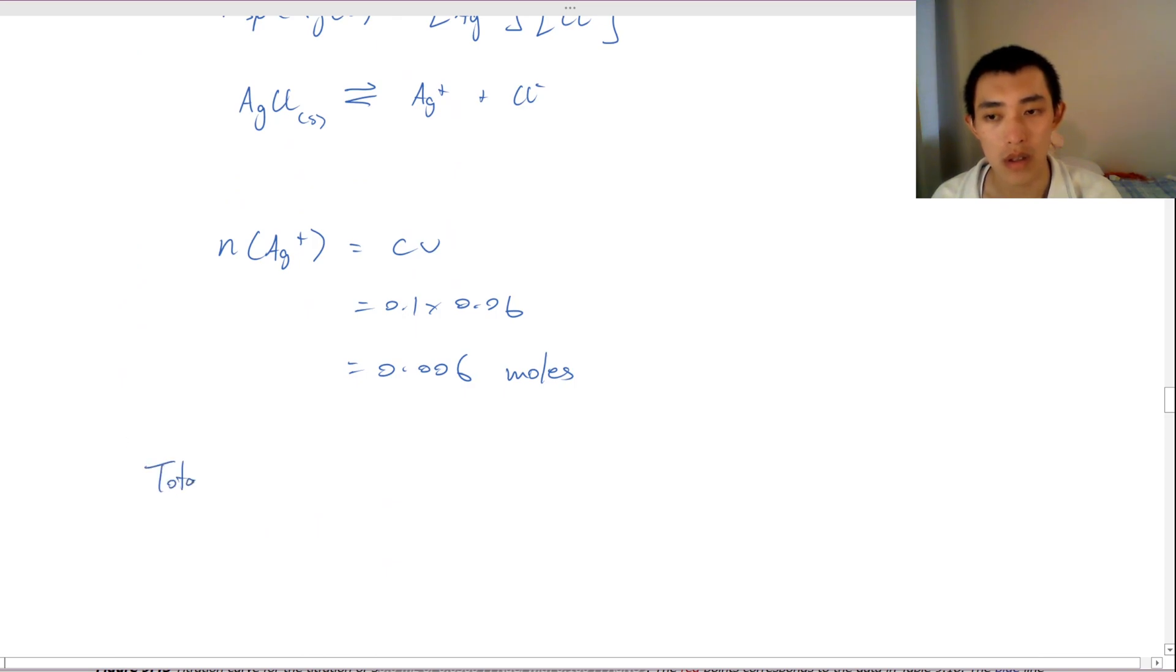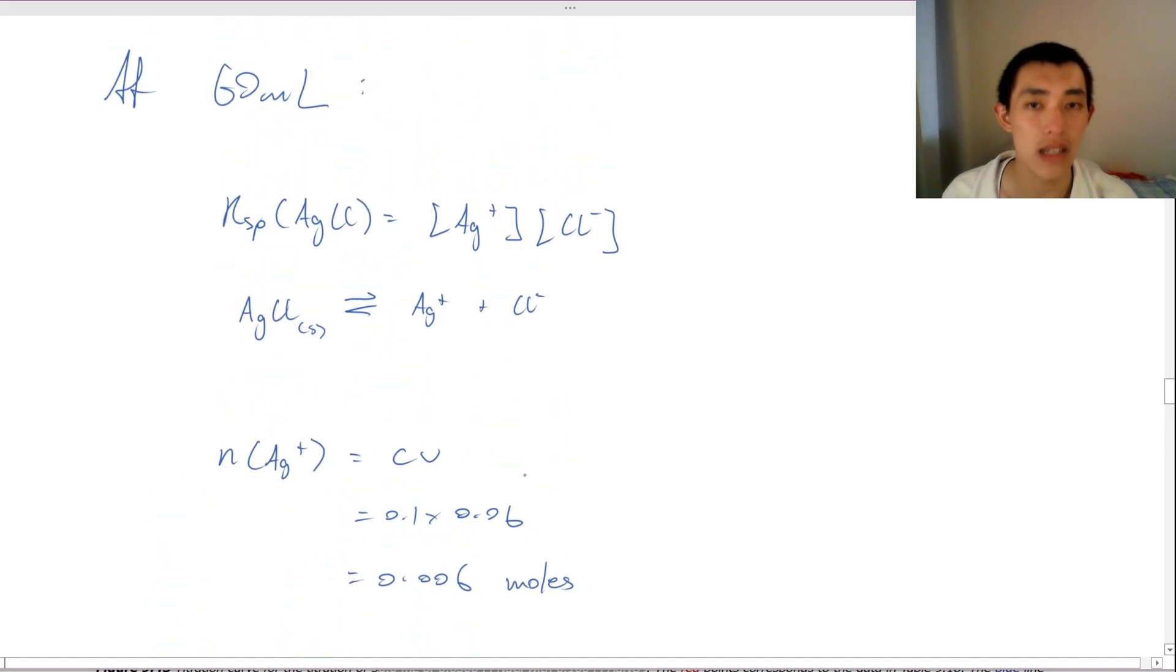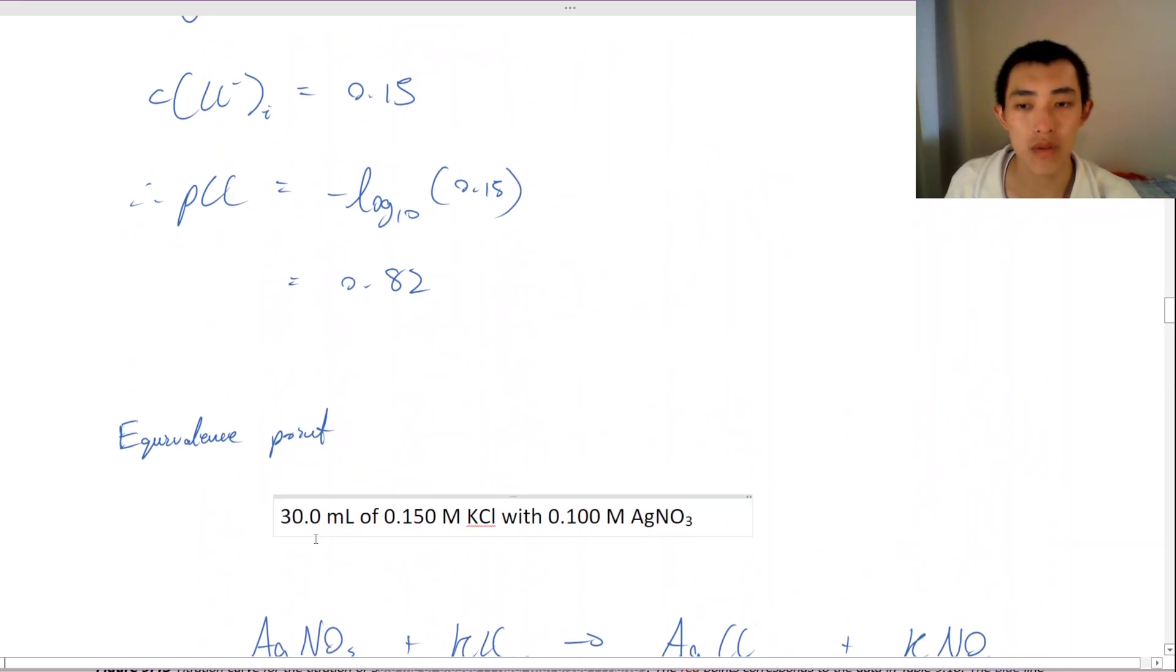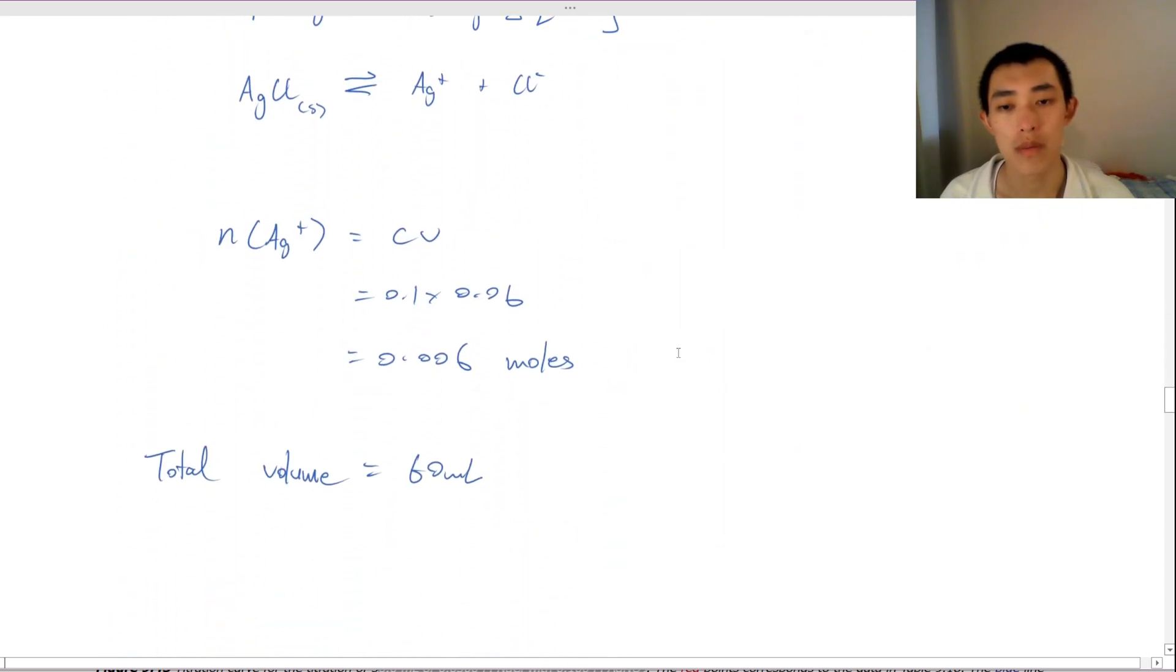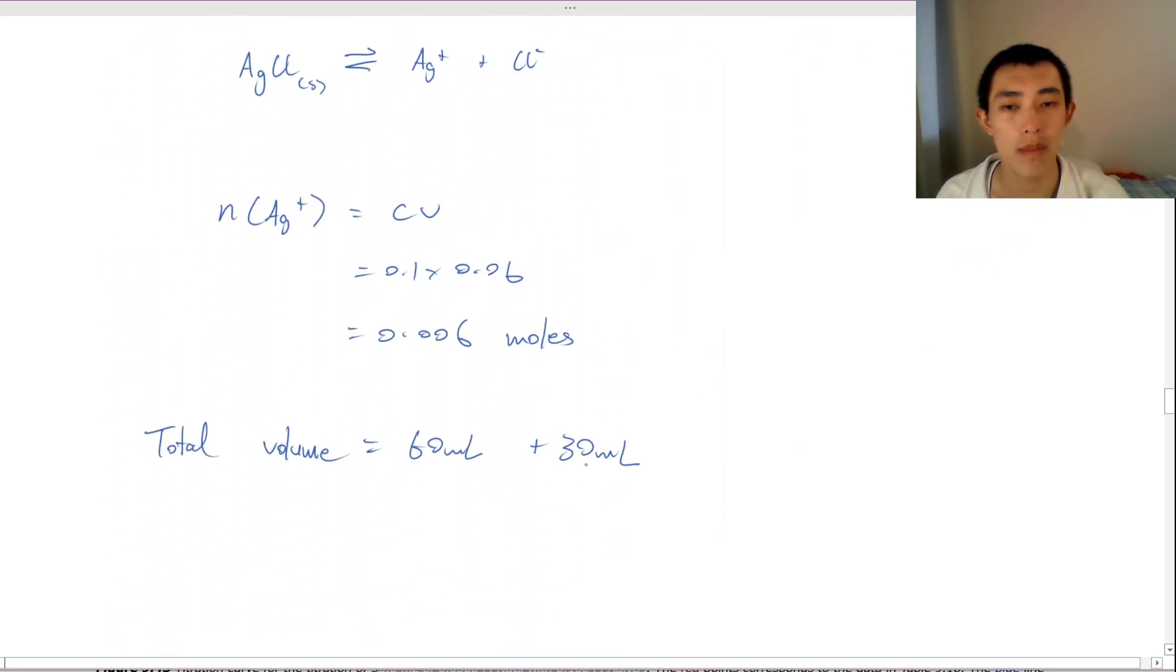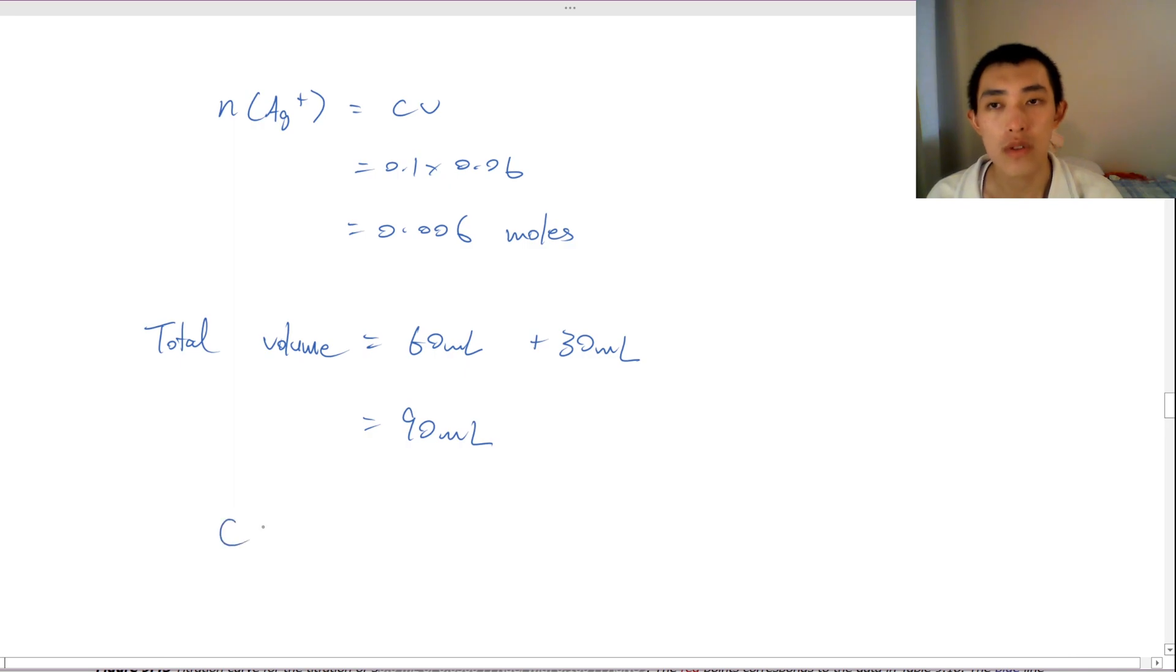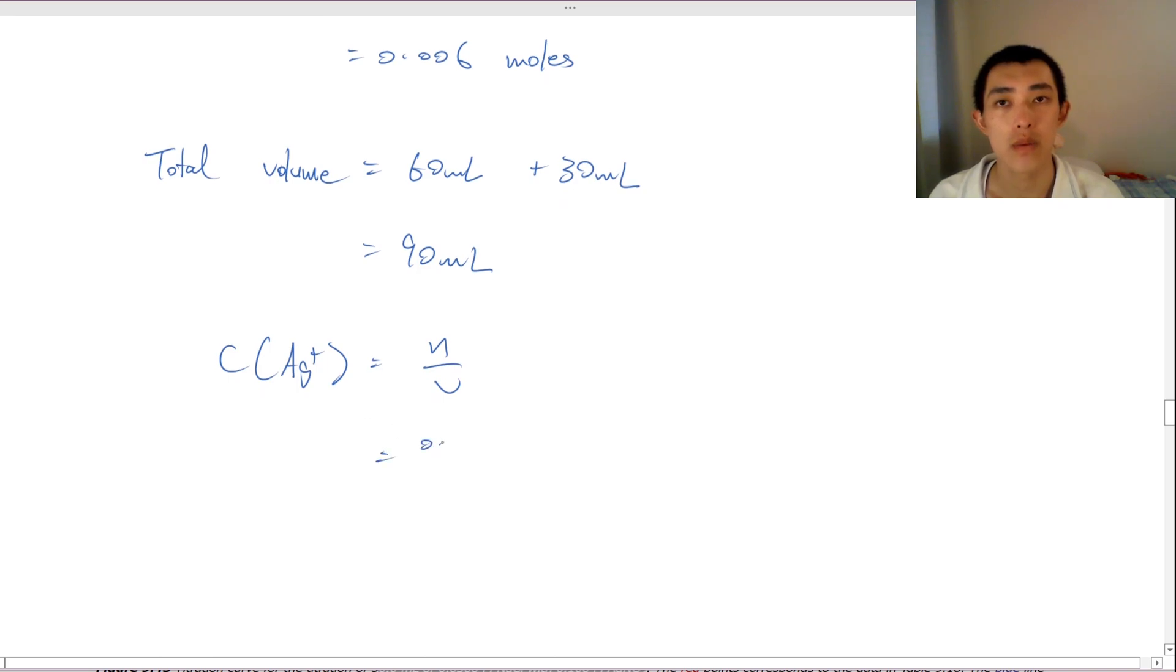So, the total volume is actually equal to 60 milliliters that we added, but there was an original volume. There was an original 30 milliliters of the KCl. So, our total volume is actually plus the original amount, which is equal to 90. So, our total volume is actually 90 milliliters. So, my concentration of silver is actually, moles by volume, is actually 0.006 divided by 0.09, and that gives me 0.067 molar. That is my concentration of silver.